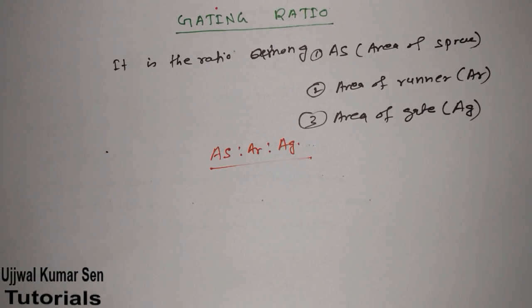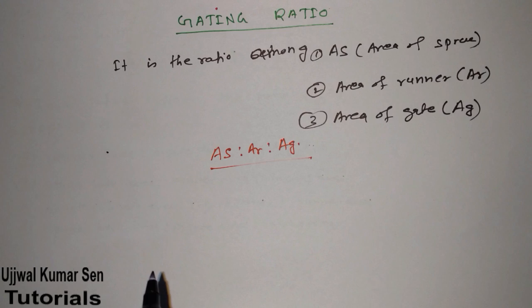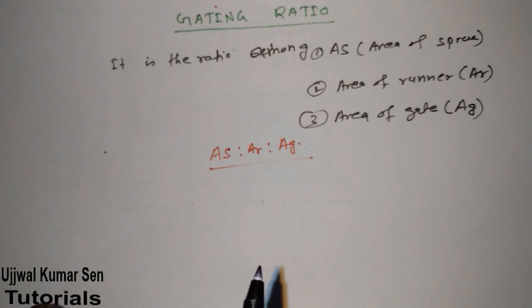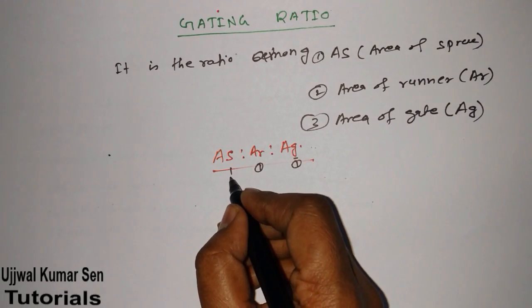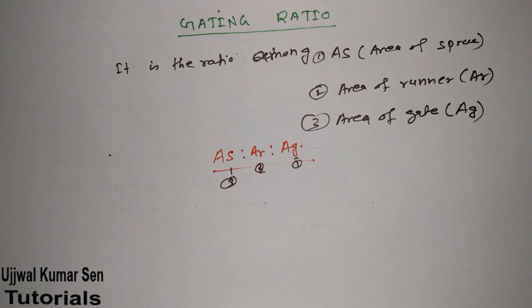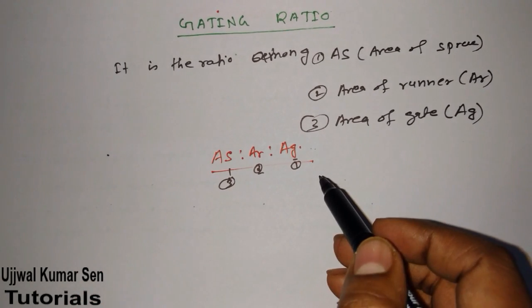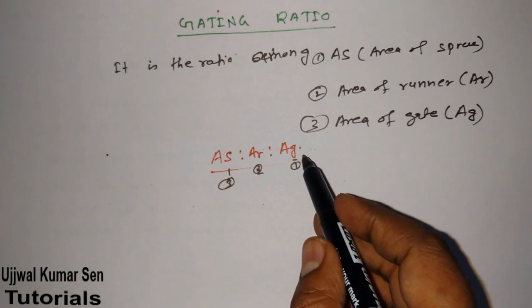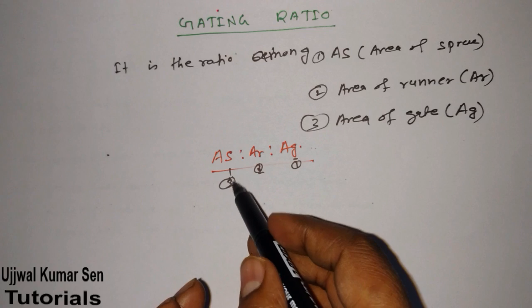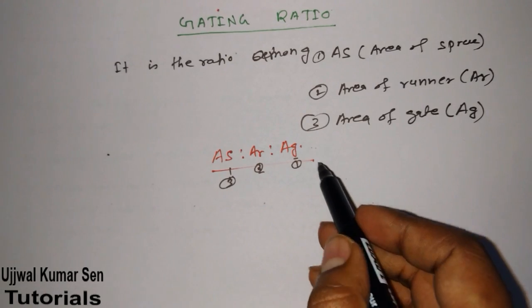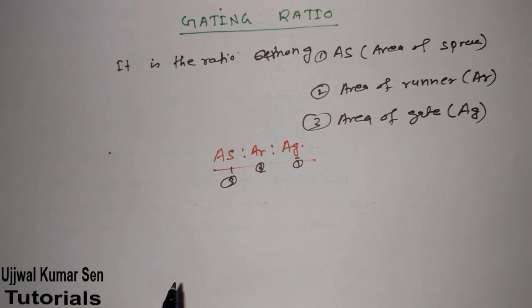Now the most important thing: how can you remember this ratio? You know the A-B-C-D alphabet. Among these three letters — G, R, S — in alphabetical order, G comes first, then R, then S. The trick is: what comes first in the alphabet will come last in the ratio. So the ratio order is: sprue (S) first, then runner (R) in the middle, then gate (G) last — the reverse of alphabetical order.